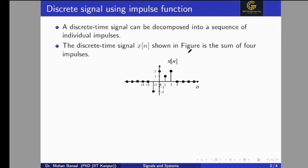Here we can see that in one signal x[n], it consists of four finite impulses. One impulse occurs at n equal to minus one, and the other three impulses are at n equal to zero, one, and two. So we can represent any discrete time signal by a sum of individual impulses.